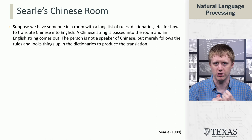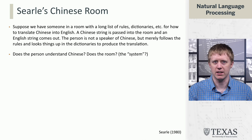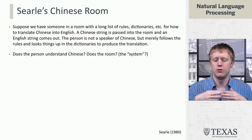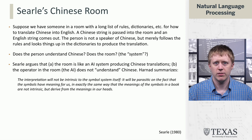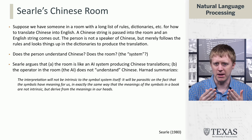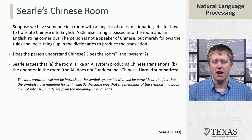The question is: where is the understanding of Chinese coming from? It doesn't seem to be the person, because they don't know Chinese. But there's this system — the person operating inside the room — that is able to do this kind of manipulation and produce these translations. Searle argues that the room is kind of like an AI system, producing things similar to how Google Translate produces translations in Chinese.